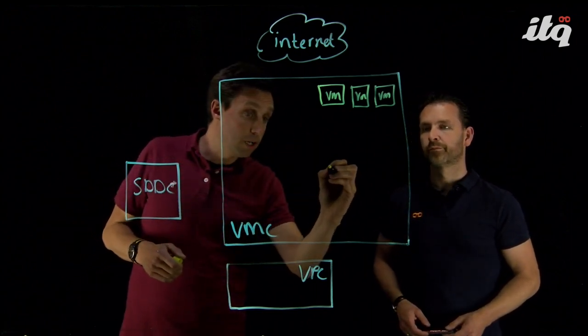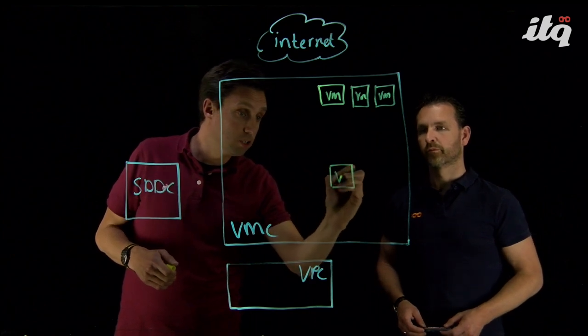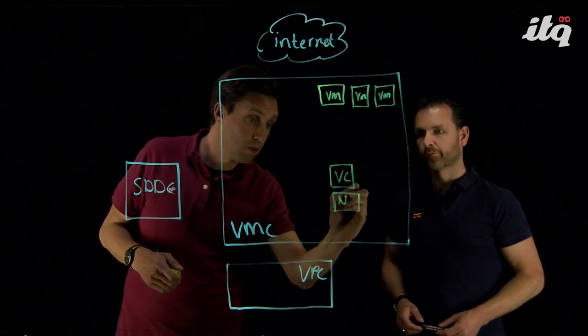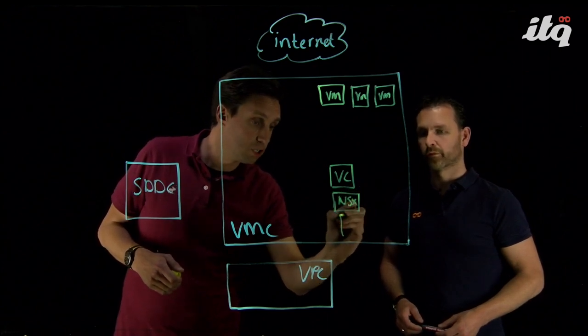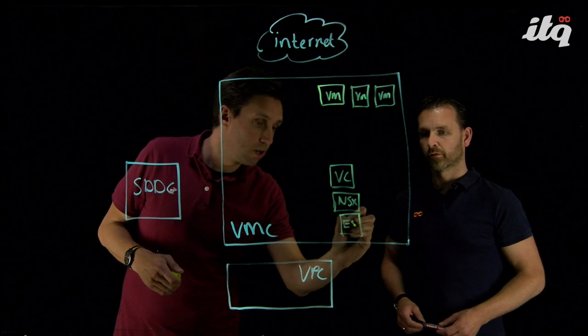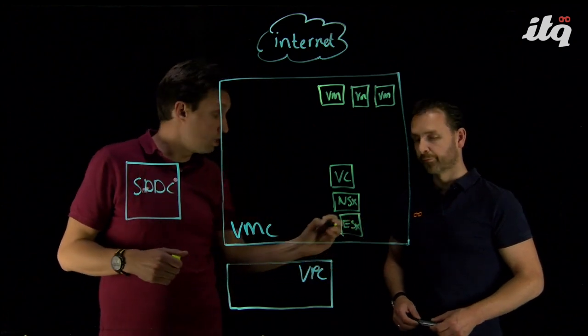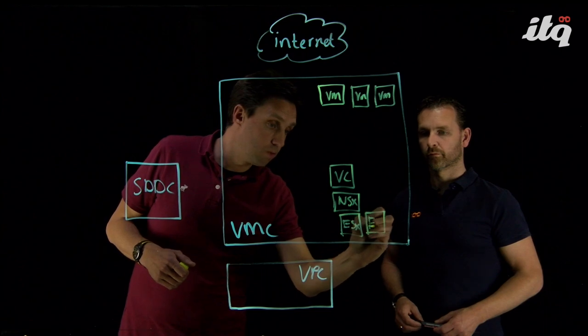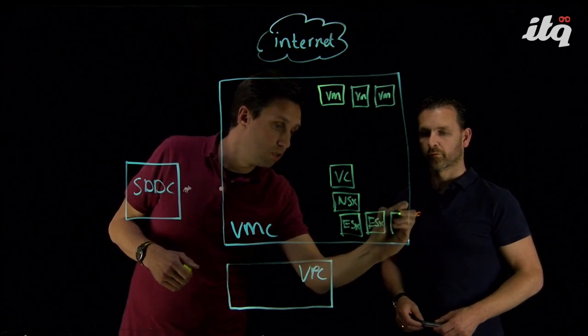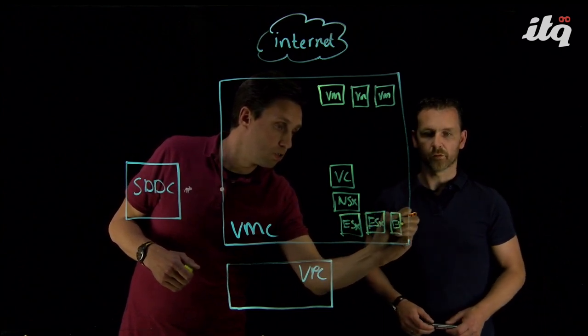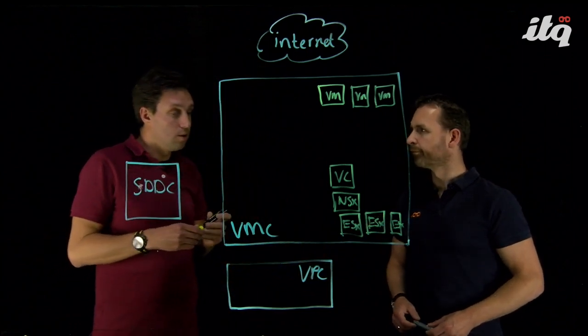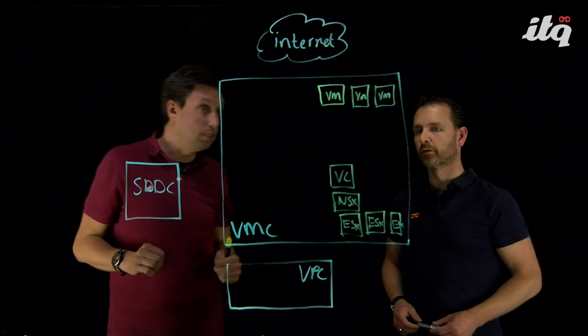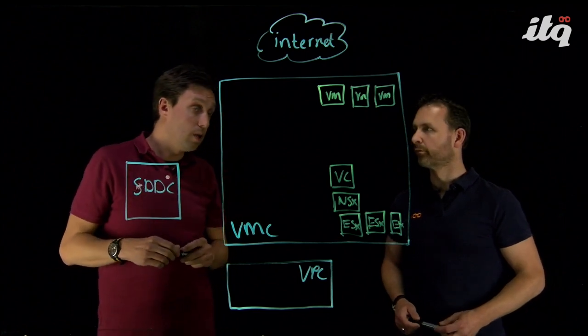Next to that, we have our management components. For example, your vCenter server, but also the NSX manager. And of course, we need our ESXi hosts. VMware Cloud on AWS, the minimum configuration is three ESXi hosts. So, that is the first part, the first components we need here in VMware Cloud on AWS.